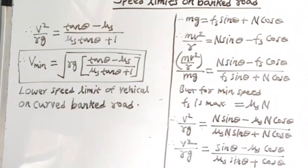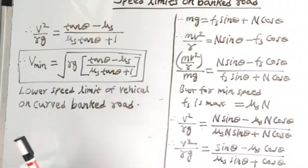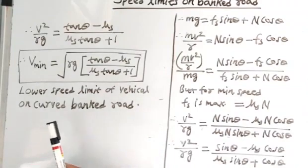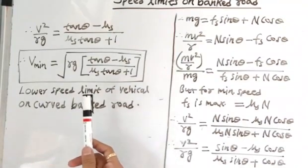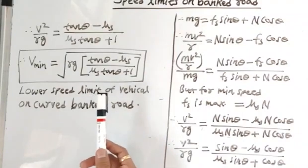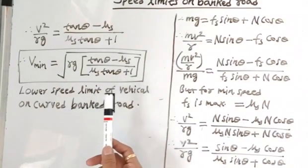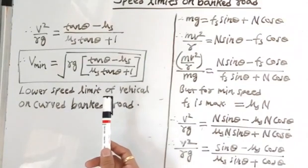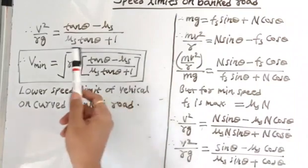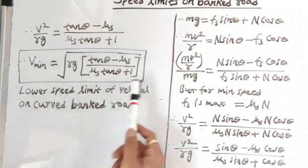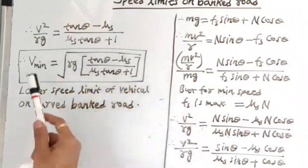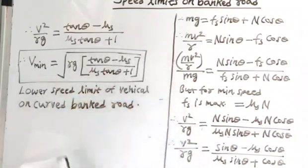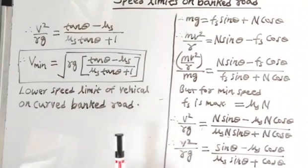As we can see in the equation for the lower speed limit of a vehicle on a curved banked road, it is independent of the mass of the vehicle, because the physical quantity M is absent from the equation.